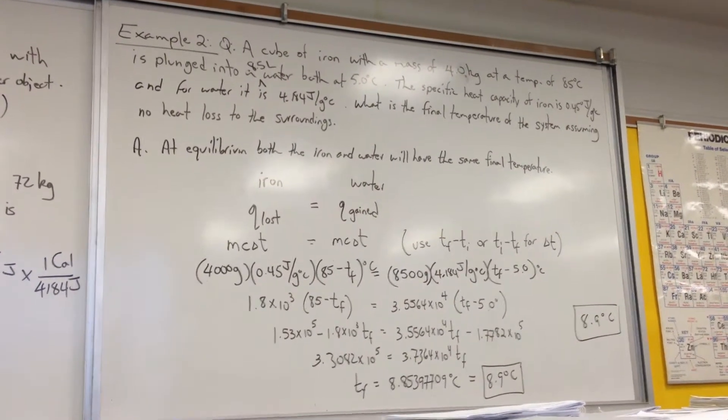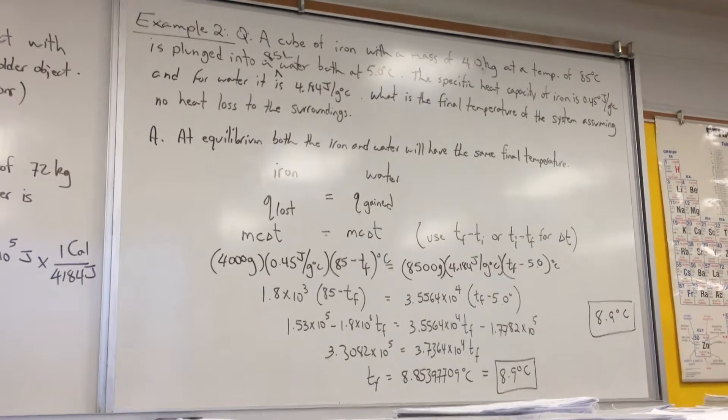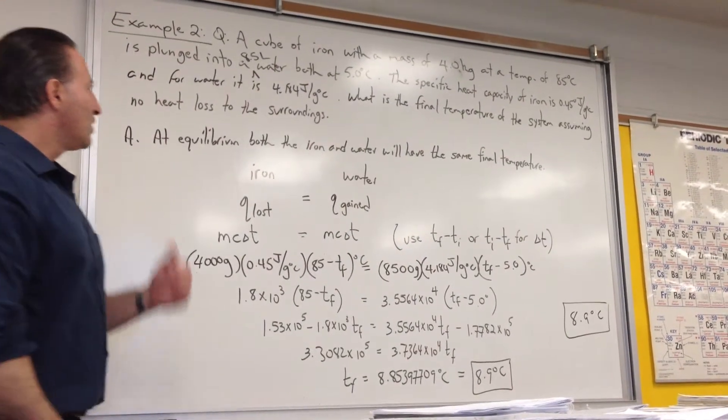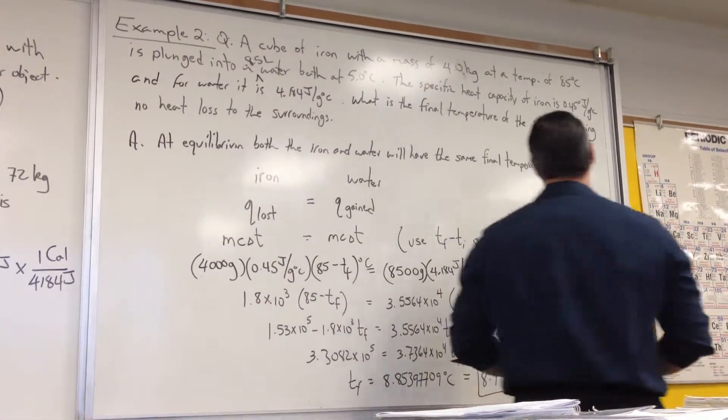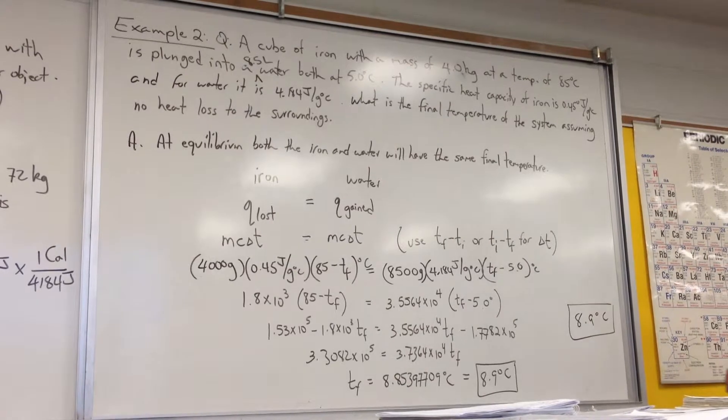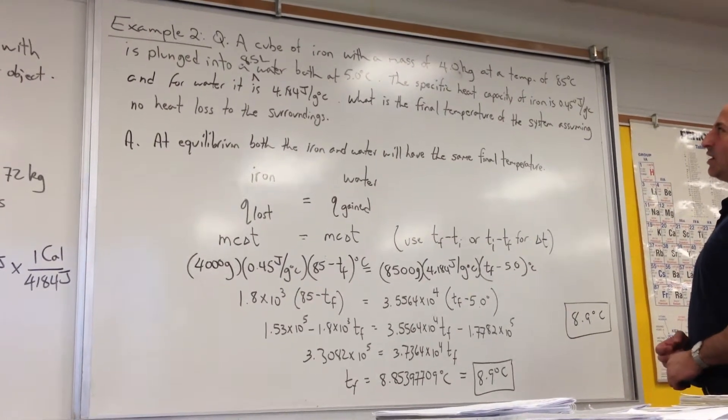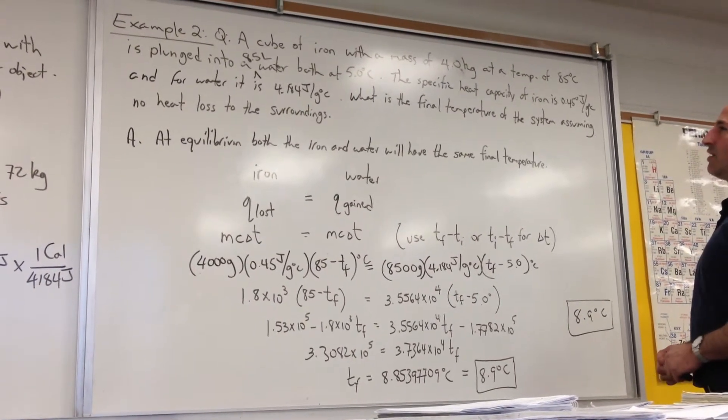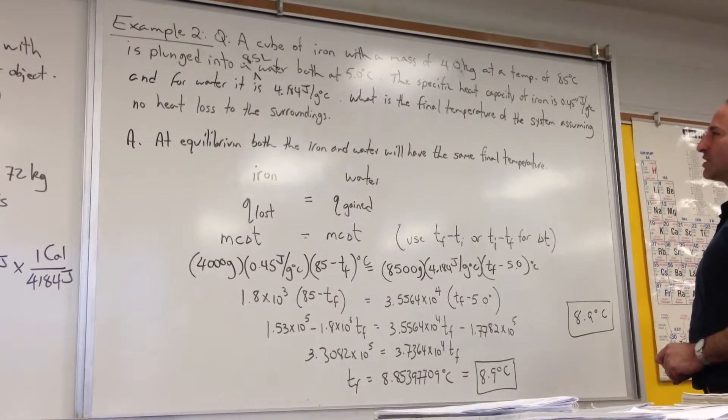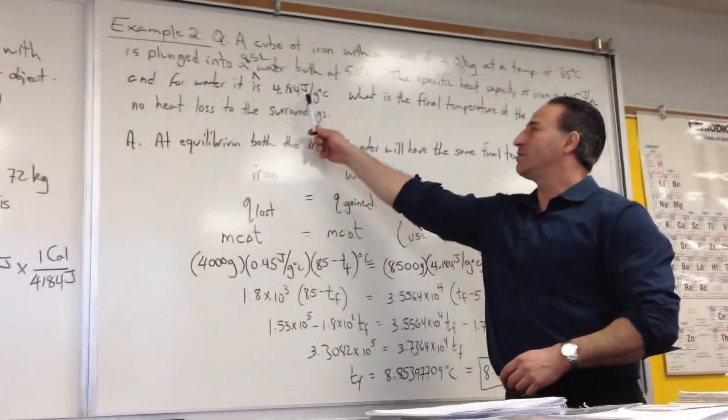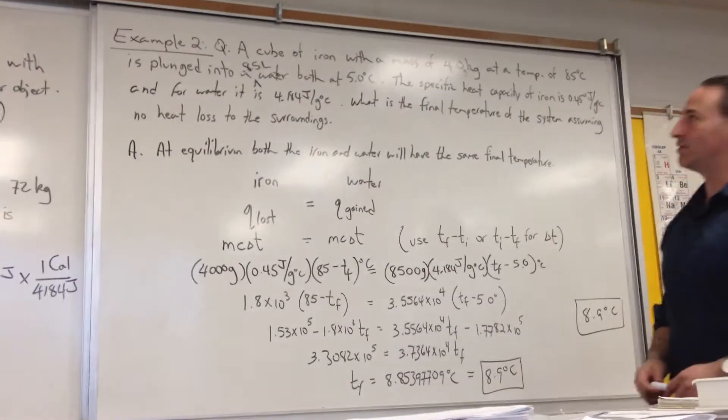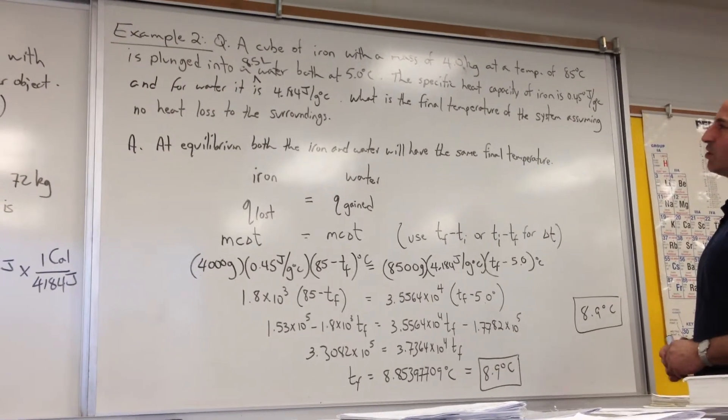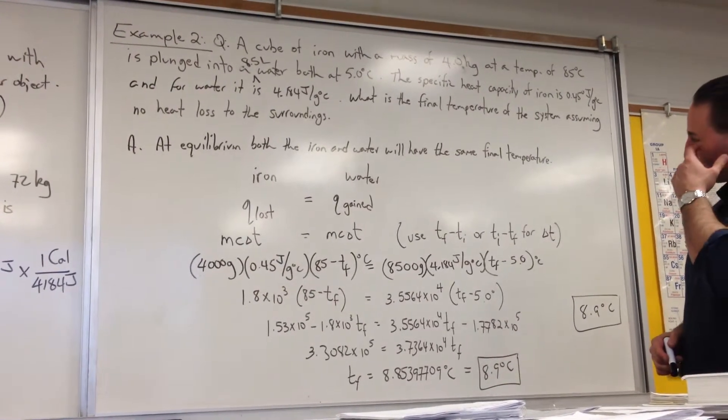That's going to happen when they both reach the same temperature. When both of those things reach the same temperature, they have the same kinetic energy in their molecules. The question is, a cube of iron with a mass of 4 kilograms, with a temperature of 85 degrees Celsius, is plunged into an 8.5 liter water bath at 5 degrees Celsius. The specific heat capacity of iron is 0.45 joules per gram degree Celsius. And for water, it is 4.184 joules per gram degree Celsius.